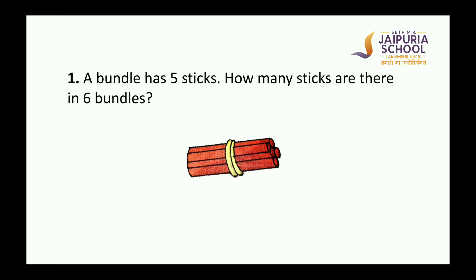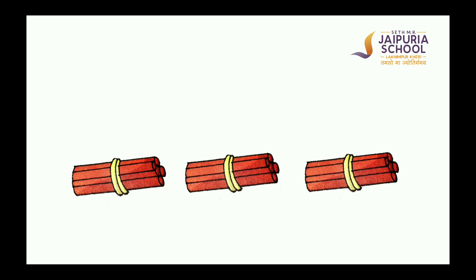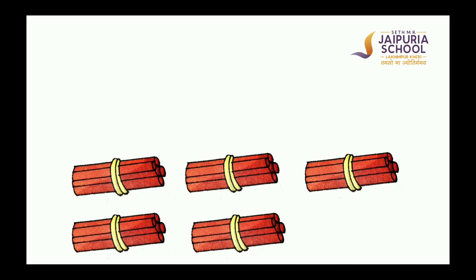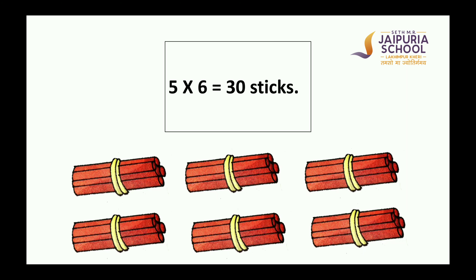Here is our first word problem. A bundle has 5 sticks. How many sticks are there in 6 bundles? Let's solve this word problem with the help of pictures. Let's arrange the 6 bundles: 1, 2, 3, 4, 5, 6. Now we have 6 bundles. As we know that each bundle has 5 sticks, so we can say 5 taken 6 times is 30. So 6 bundles have 30 sticks.